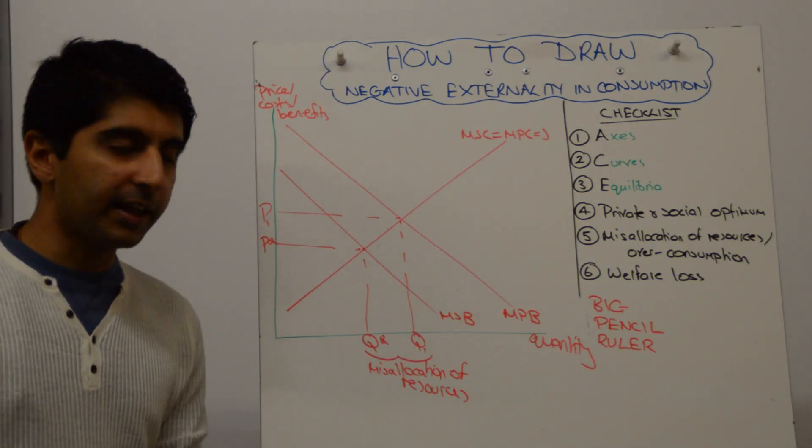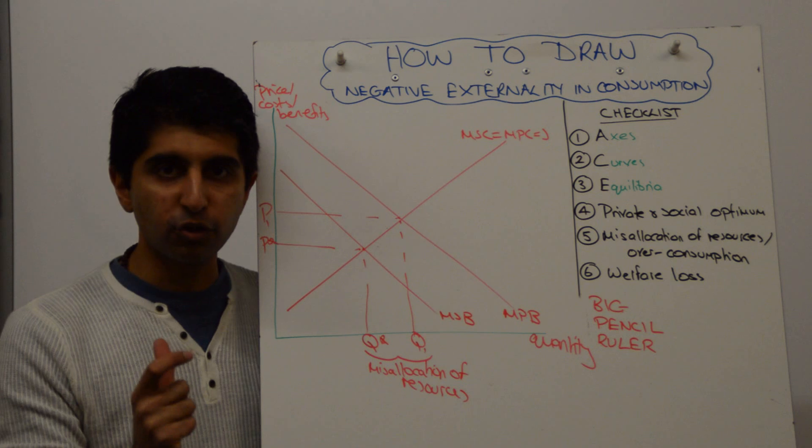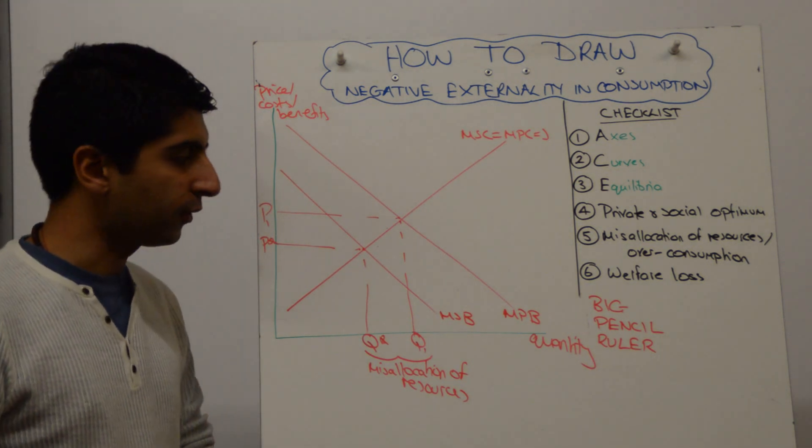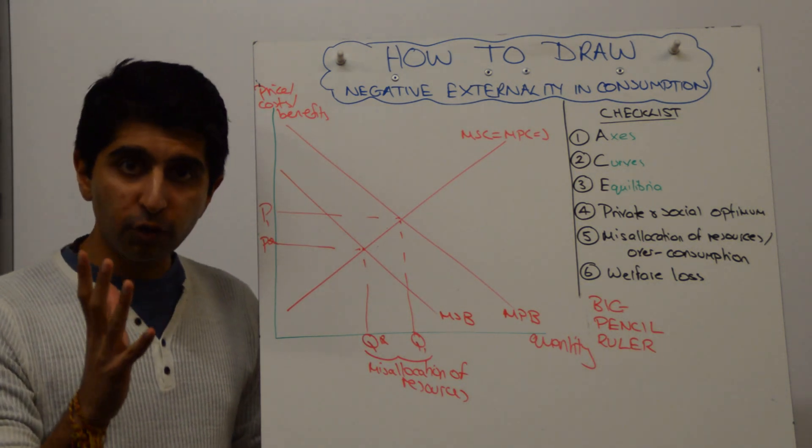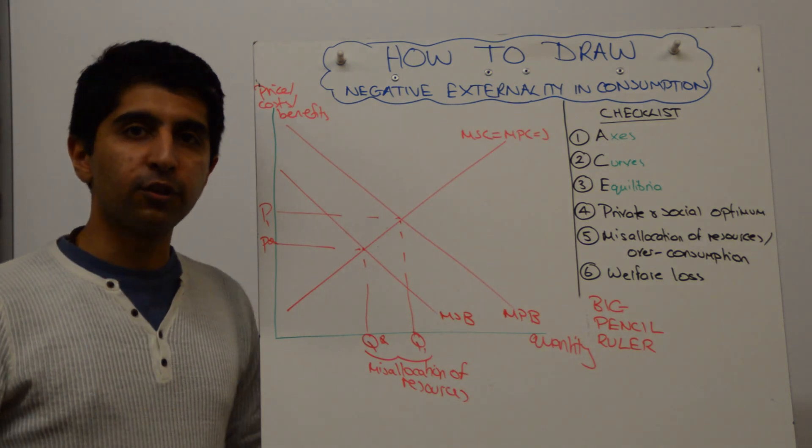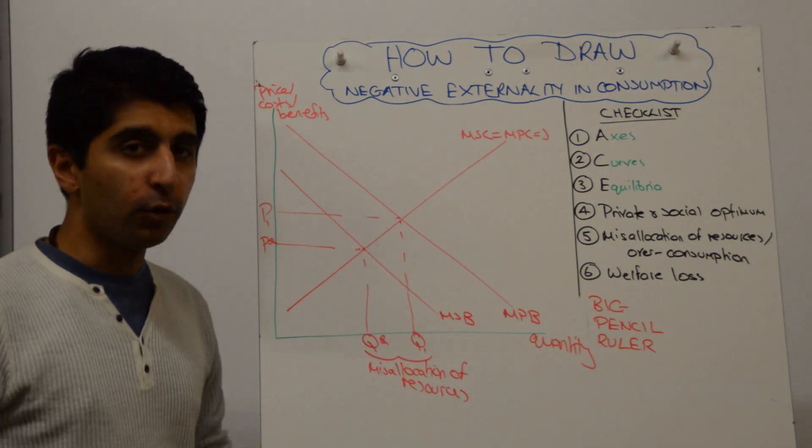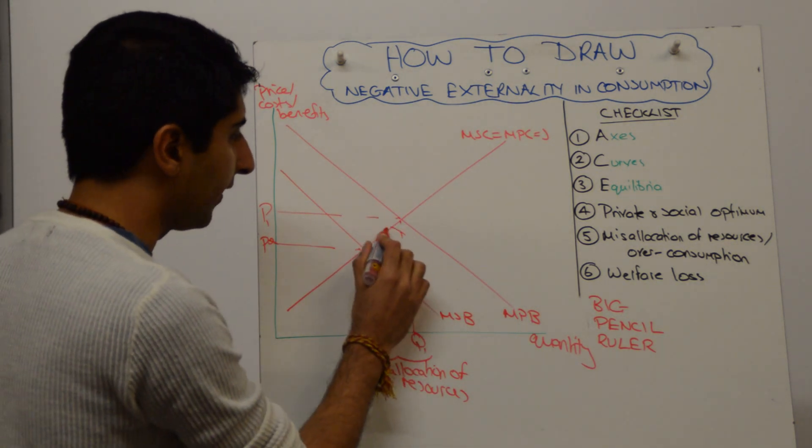And any time there is a misallocation of resources, the market is not doing its job properly, and society loses out with the loss of welfare. It's always the triangle, the welfare loss triangle, that points towards the social optimum. If you look here, there is only one triangle that does that, and that's this one.